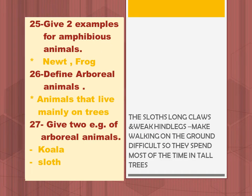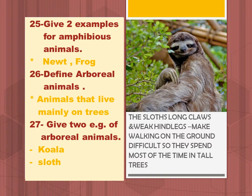Give two examples of amphibious animals: newt and frog. Define arboreal animals: animals that live mainly on trees. Give two examples of arboreal animals: koala and sloth.